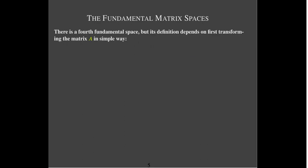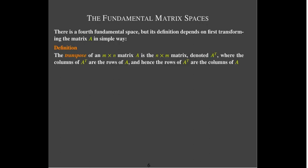Now, I said there were four, and there are four. But before we can discuss the fourth fundamental matrix space, we have to be able to transform the matrix in a very simple way. What we're going to do is interchange the rows and the columns of the matrix A to create a new matrix, which we call A transpose, or the transpose of A. We write A with a superscript capital T.